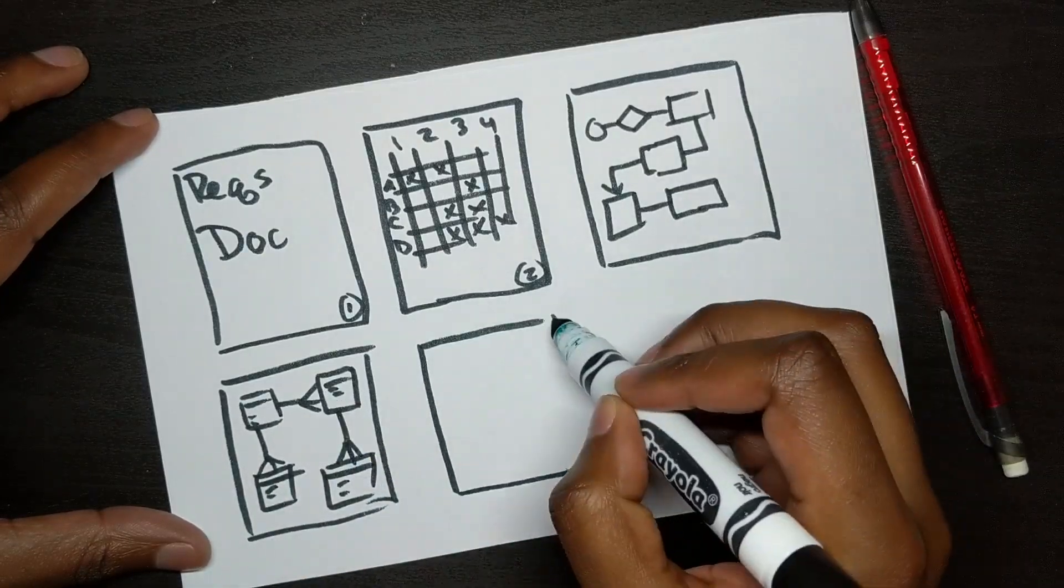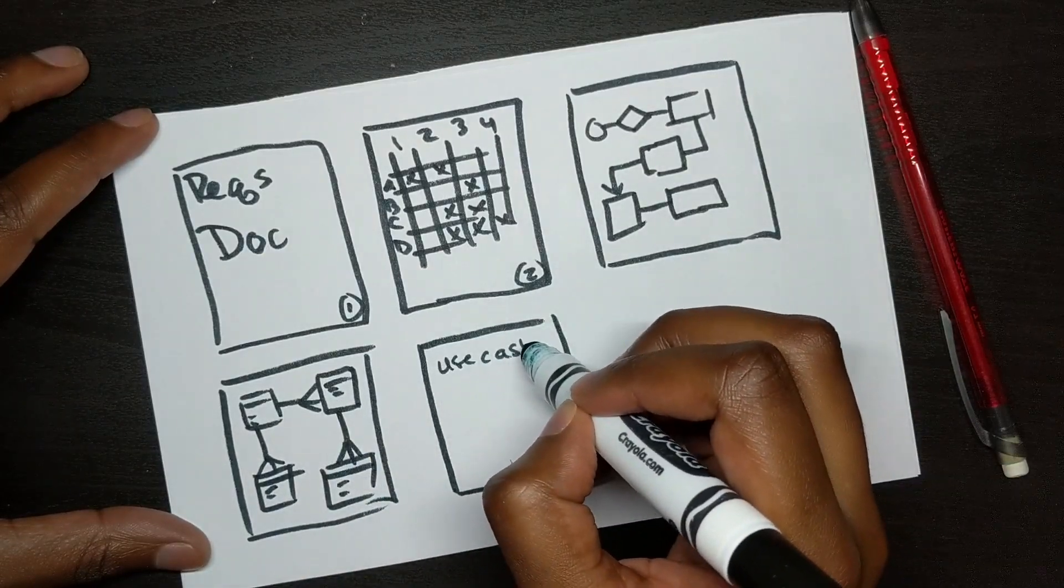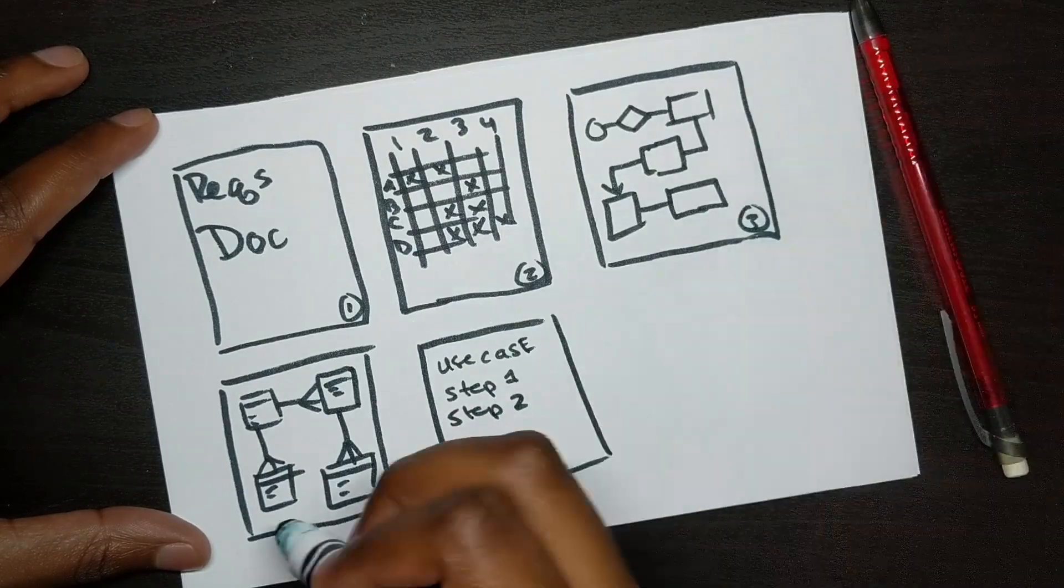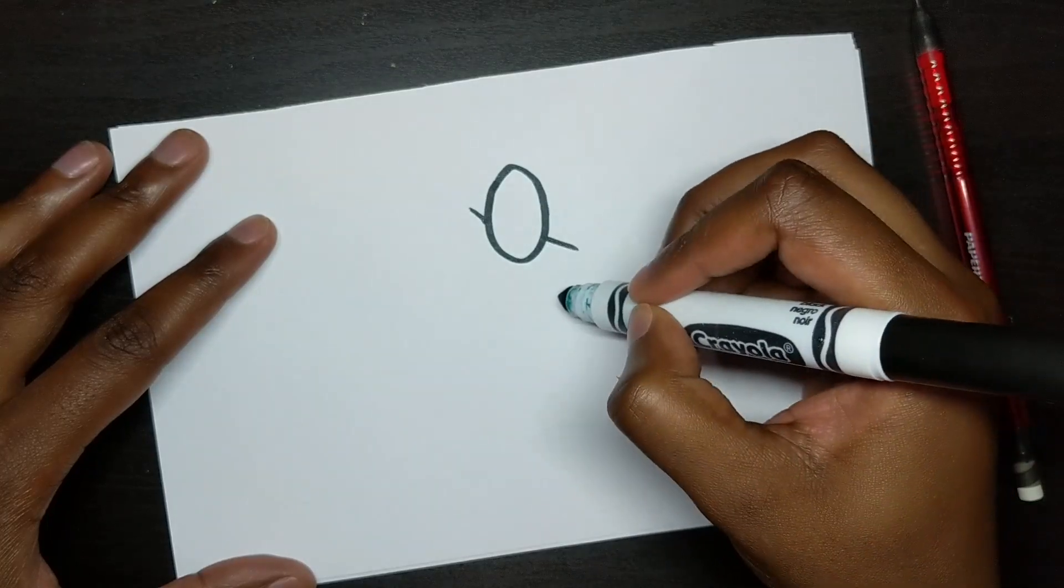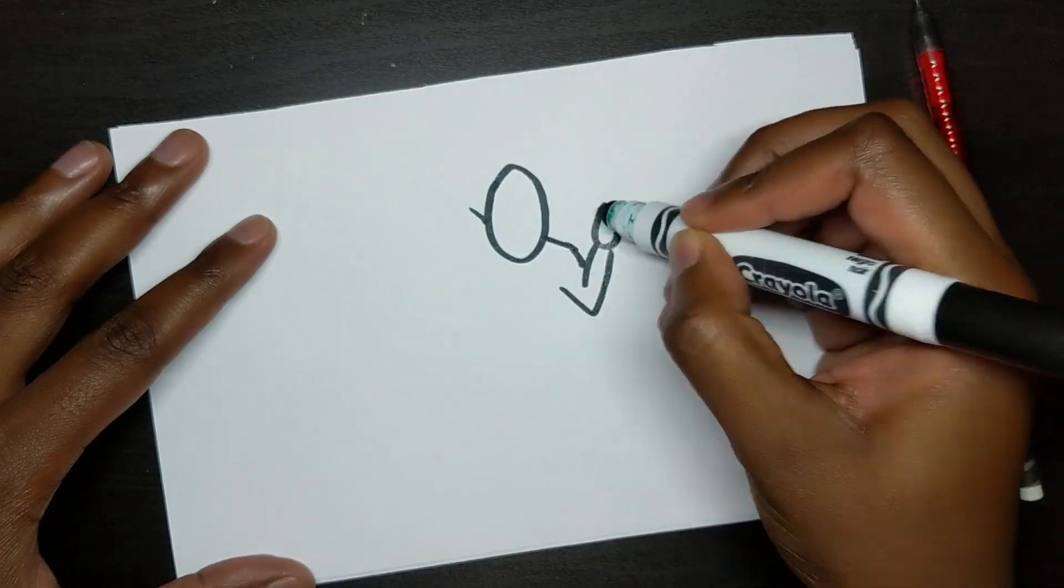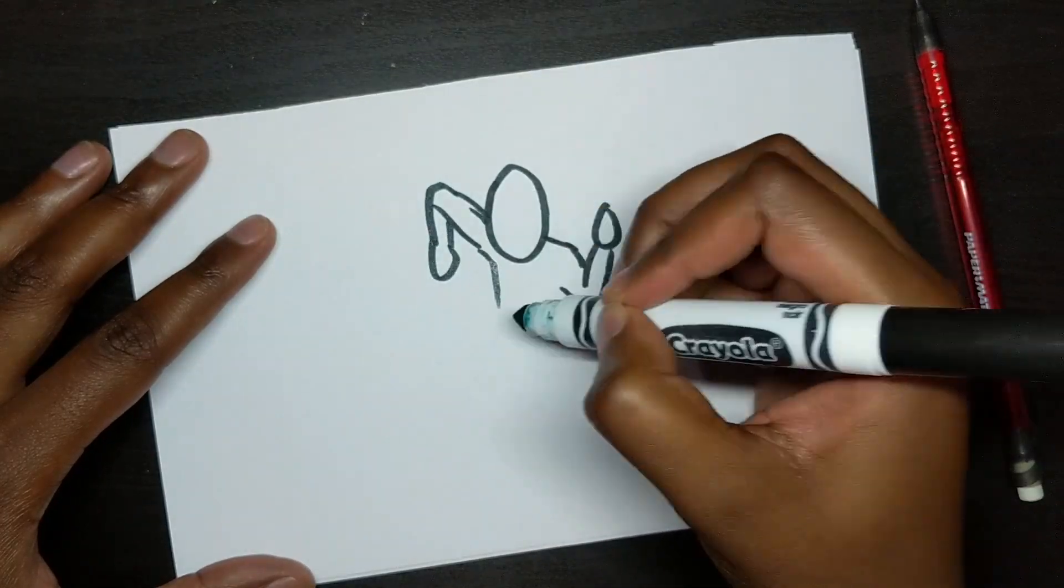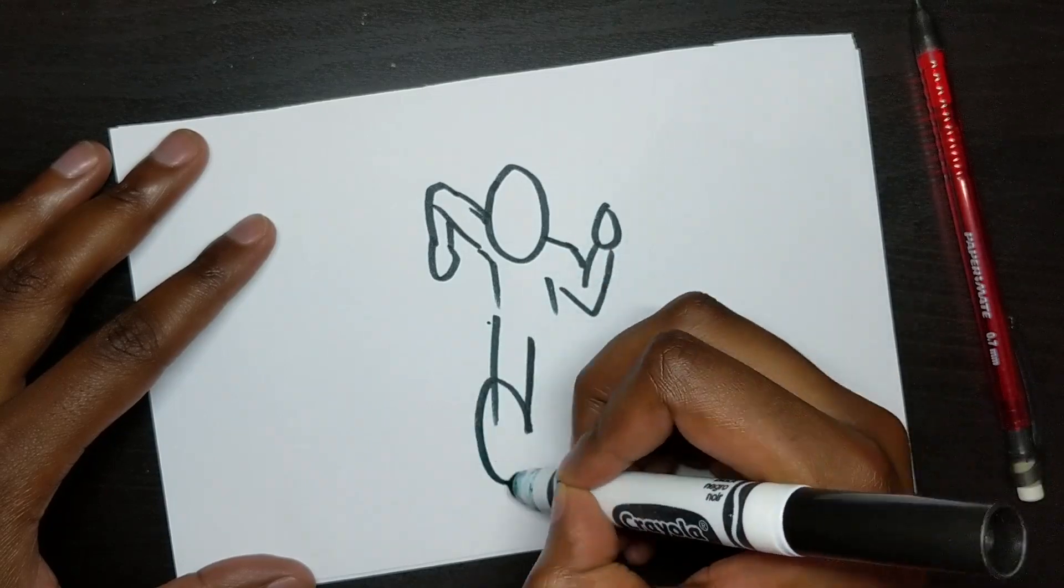And they can be in the form of text, models, or wireframes. Now in agile, things are a little different, because agile is intended to not be document-heavy and move at a faster pace.